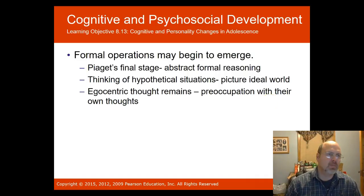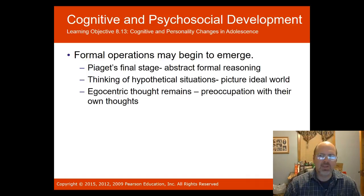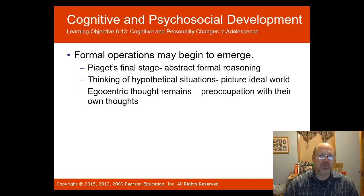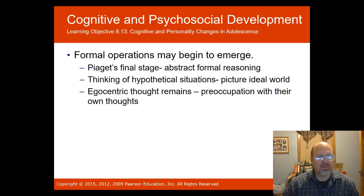Formal operations may begin to emerge in adolescence. Piaget's final stage involves abstract formal reasoning, where the adolescent can think in hypothetical situations and picture an ideal world. This group tends to be more idealistic about what the world can be.